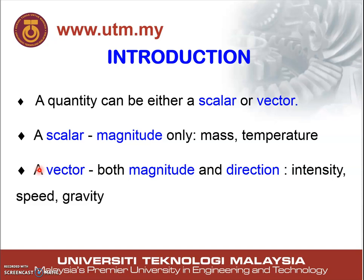A quantity can be either a scalar or a vector. So it means that in this world, our quantity can be in two forms, which is scalar or vector. Scalar is the quantity with magnitude only, such as mass or temperature, whereas a vector is a quantity that has both magnitude and direction, such as intensity, speed, and gravity.